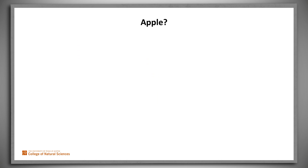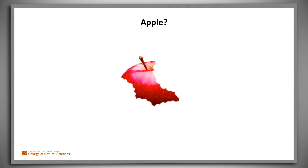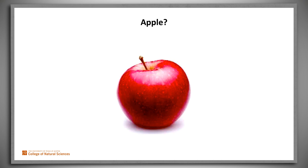Even words that seem clear can be vague in some contexts. This is an apple. Take a bite — it's still an apple. And another bite, and a few more bites. Still an apple. Now we eat all but a crumb. For sure, this isn't an apple. Exactly when did the juicy red thing cease being an apple?